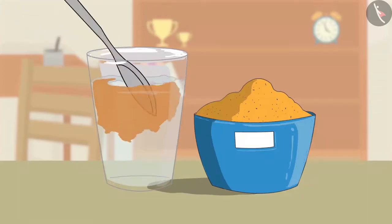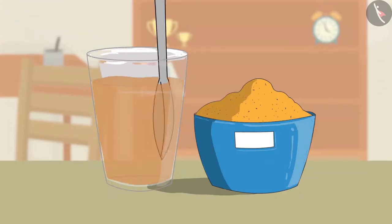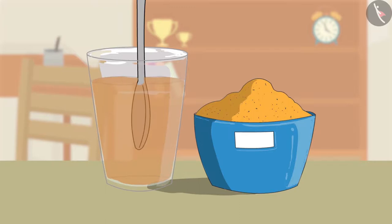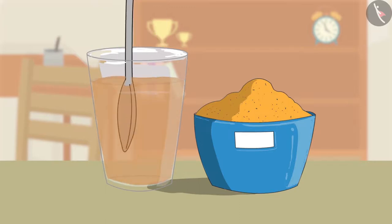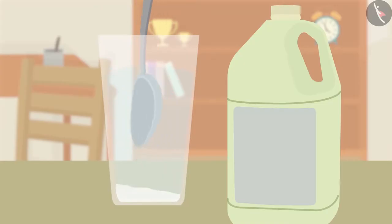In the fourth tumbler, Zia adds a spoonful of turmeric and stirs the water. See, Bobo! Turmeric completely dissolved in the water and the water turned yellow.